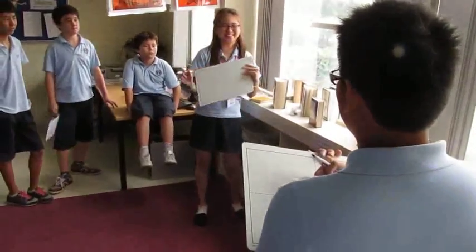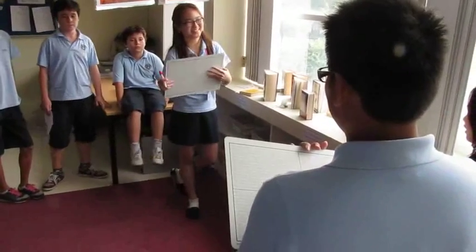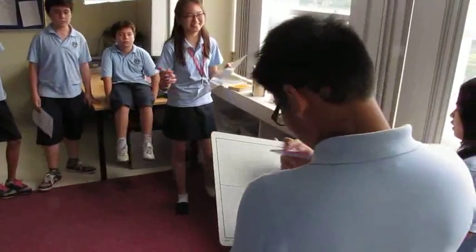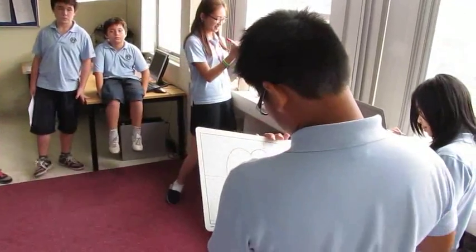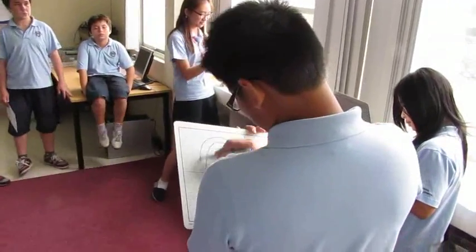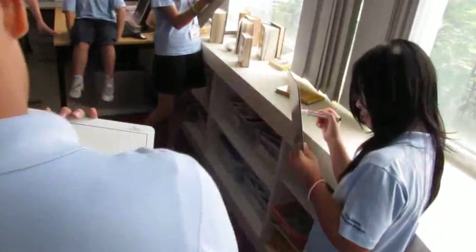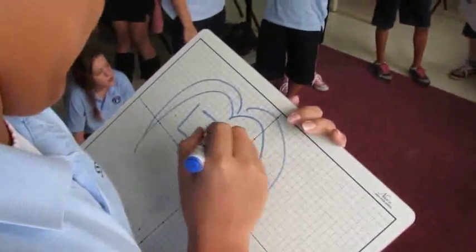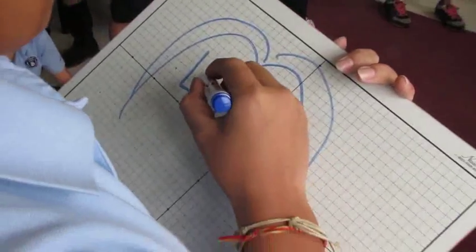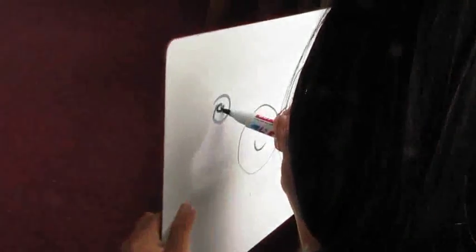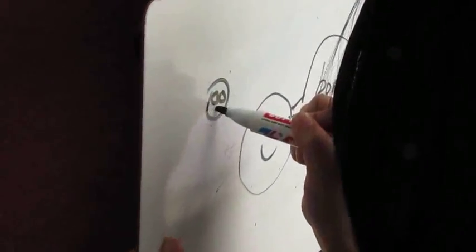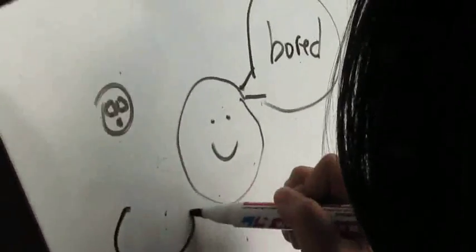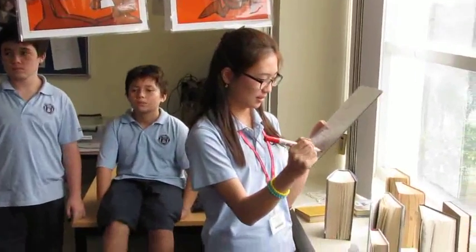Today, we're learning about multiplying rational numbers. The problem is 3 fourths divided by 1 half. But we have to change this to a reciprocal. So you exchange like this, then multiply it together and cross cancel, and then you get 3 halves, which is 1 and 1 half.